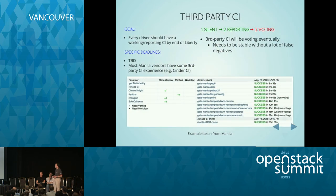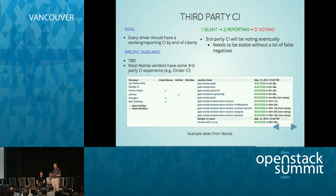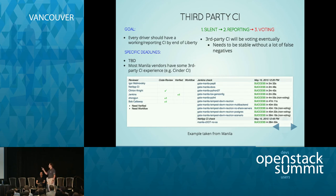For planned work in Liberty and beyond, one main focus will be third-party CI. We need to focus on quality, and we've seen from other projects like Cinder and Neutron that vendor testing alongside unit testing and reference implementation gating is essential. Looking at Cinder today, the number of tests kicked off with every commit is substantial. This will be a big focus for Manila. We'll be discussing milestones for requiring vendors to participate, make sure assignments and plans are in place, and start reporting test results.